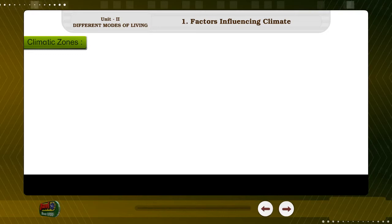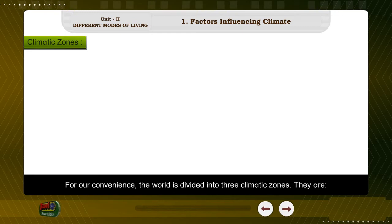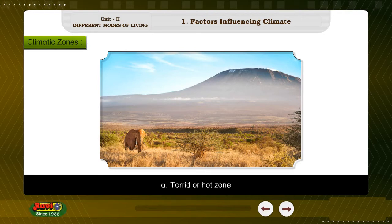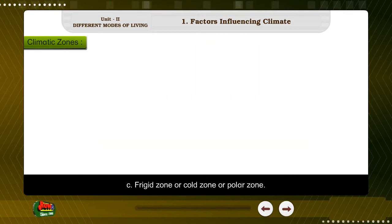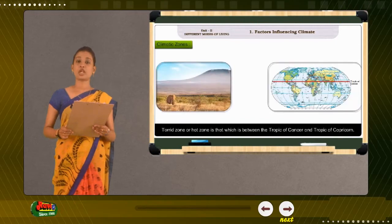Climatic Zones. For our convenience, the world is divided into three climatic zones. They are: A. Torrid zone or hot zone, B. Temperate zone, and C. Frigid zone or cold zone or polar zone.